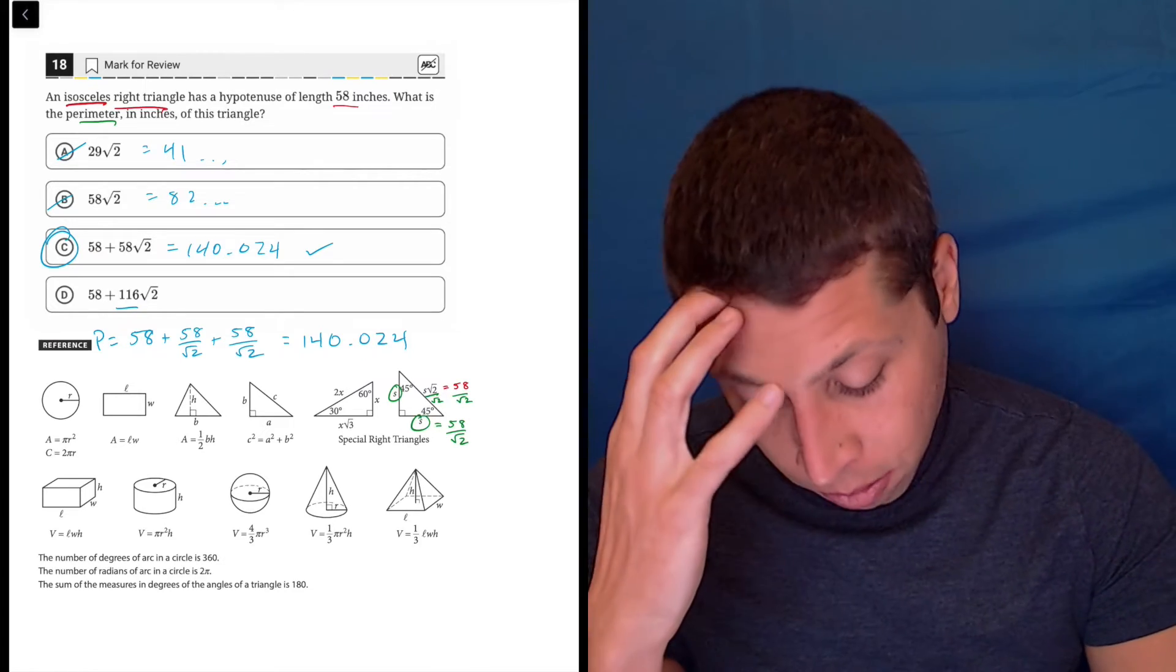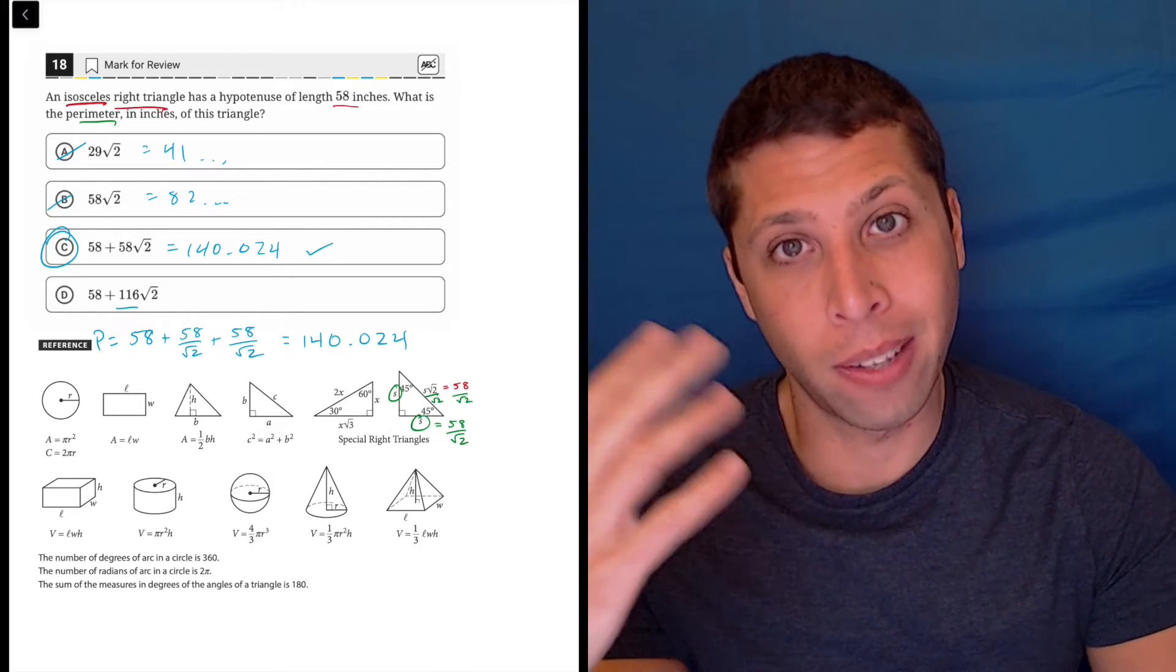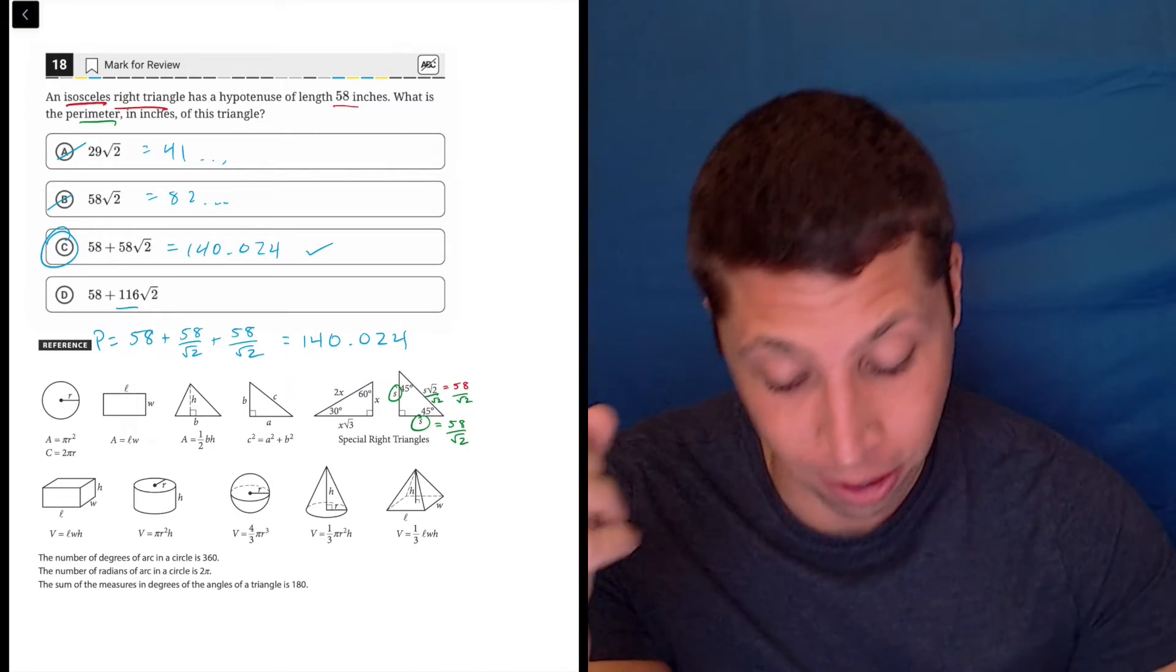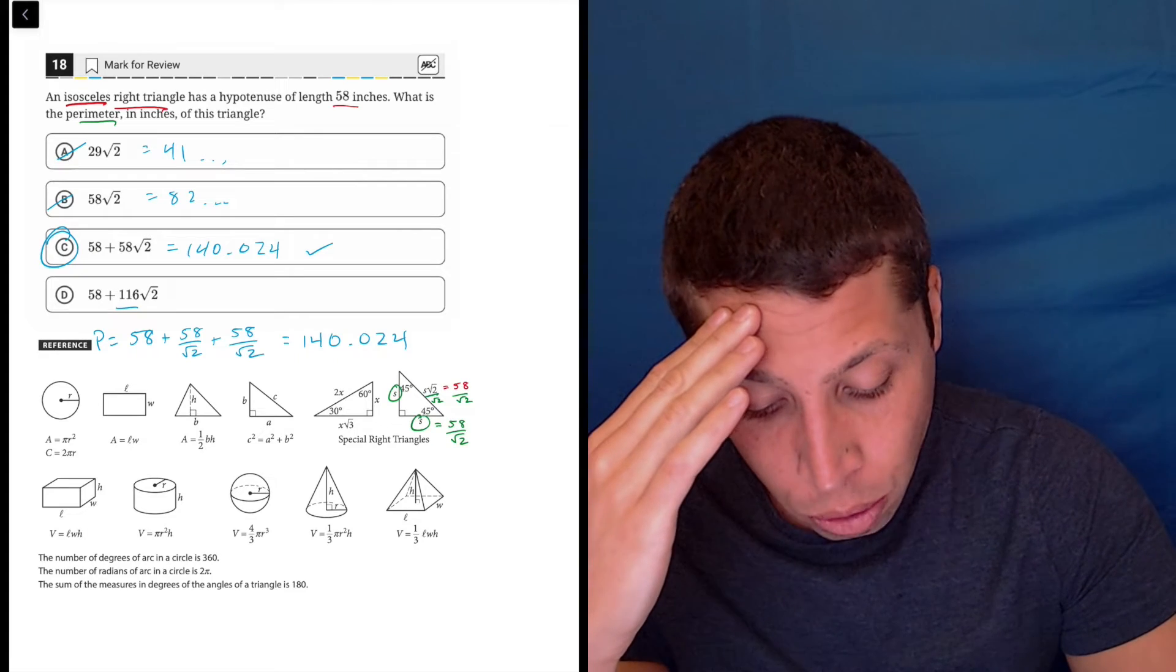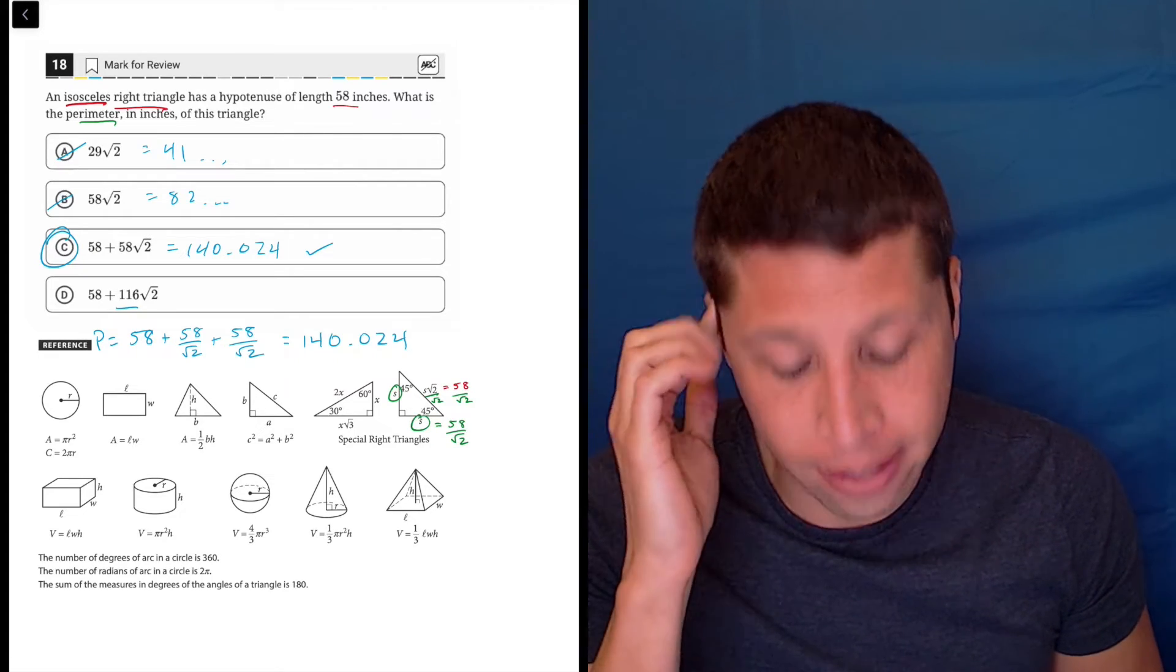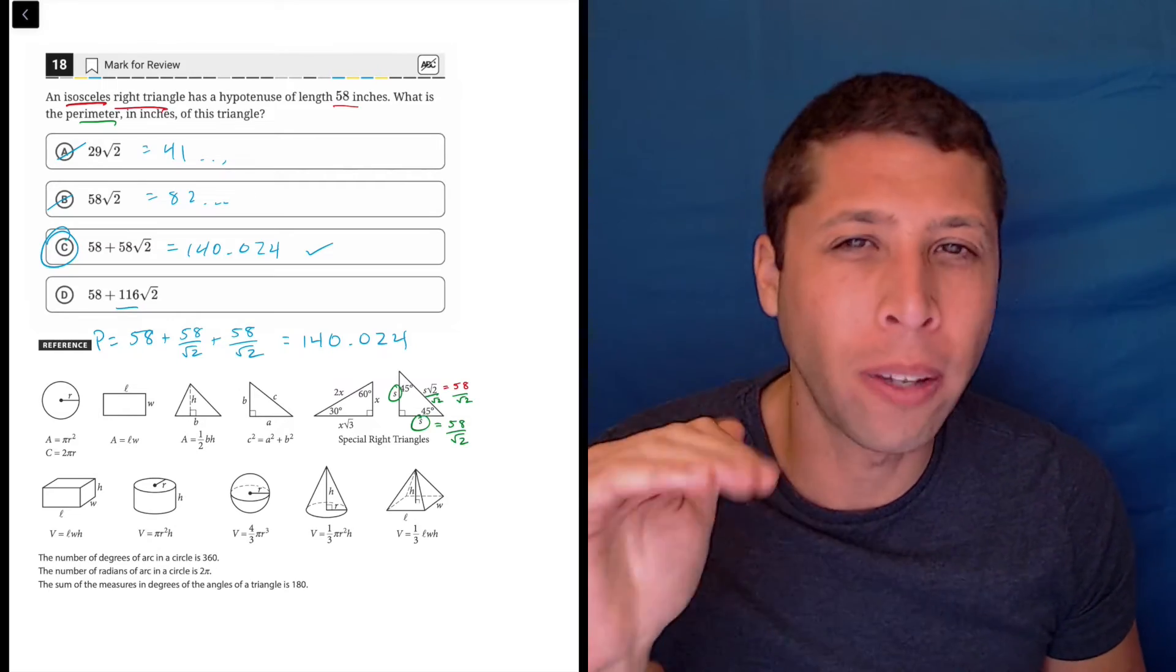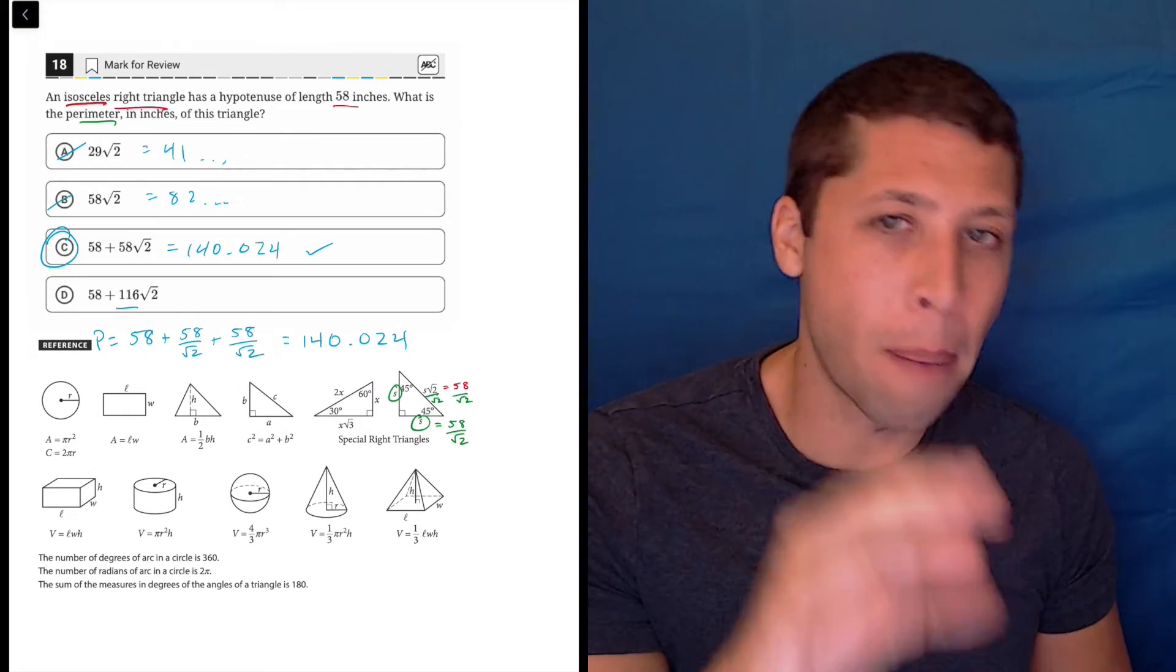If you wanted to do this more kind of like, I don't know, math textbook-y, like your math teacher would want you to do it, we would need to do something called rationalize the denominators. Basically, 58 over root 2 is not a good number. We don't like having radicals in denominators of fractions.